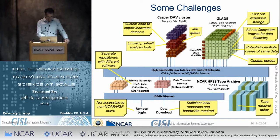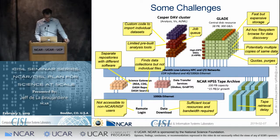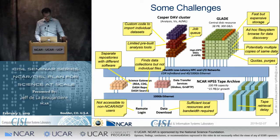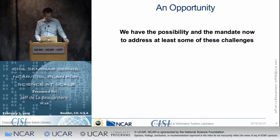In the science gateway or data repository realm, we also have some other lower-level challenges. We've got separate repositories with different software — it might be nice to converge those someday. And we've got dash search, which is great — it'll let you search for any NCAR data, but it finds data at the collection level, not at the individual file level for your specific time, parameter, or region of interest. So some challenges that we might be able to address.